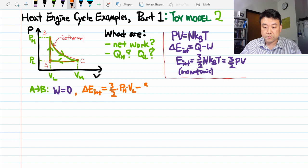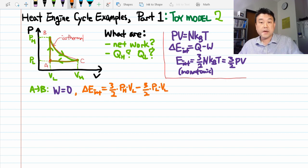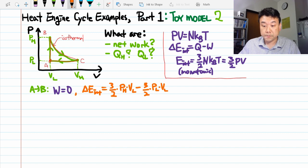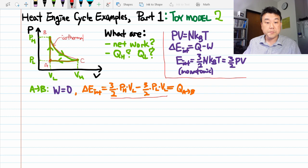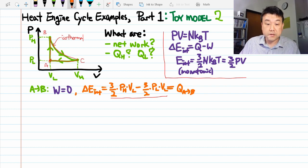minus three halves, low pressure times low volume. And since the work done is zero, this amount of internal energy change is due to the heat transferred from A to B. If you look at this expression carefully, you can see that it's positive. So that means there's a heat inflow during this isochoric heating.